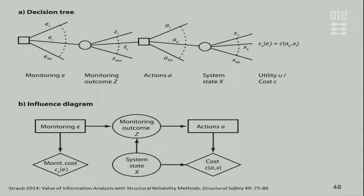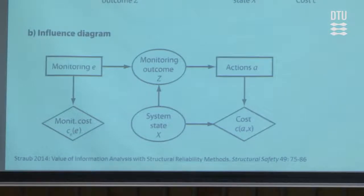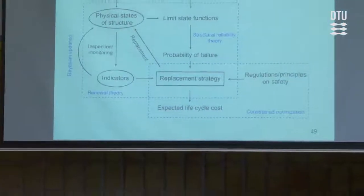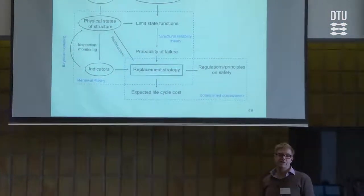This can be presented graphically in so-called influence diagrams, where the computation ends up being the same but the logic is more visible — particularly useful when a sequence of decisions must be made over a lifetime. It is an extension of the Bayesian network where we indicate the causal relation between things. Many people think the monitoring outcome determines the system state, but in reality the causal relation is the opposite — the actual system state determines what we measure. The inference process is the other way around.